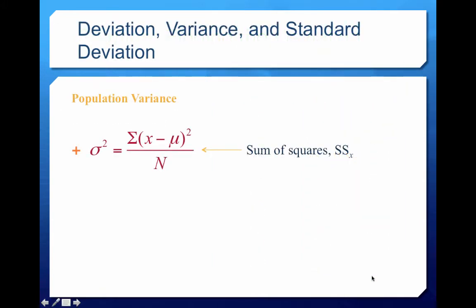Now let's talk about variance. The population variance is called sigma squared — lowercase Greek sigma. Sigma squared is calculated by summing the squared deviations from the mean for every data point, then dividing by capital N, which is the population size.